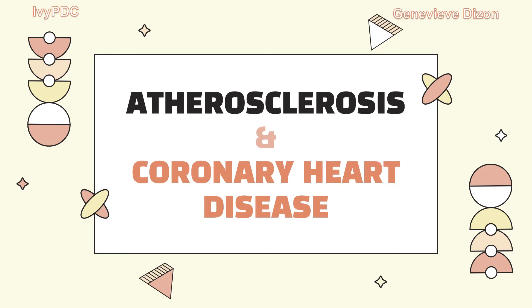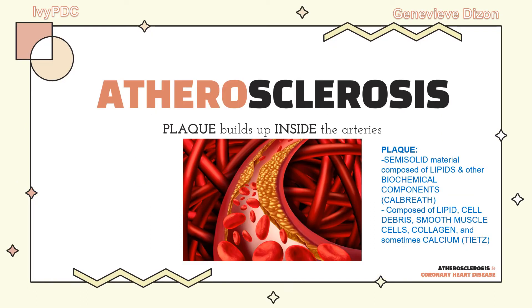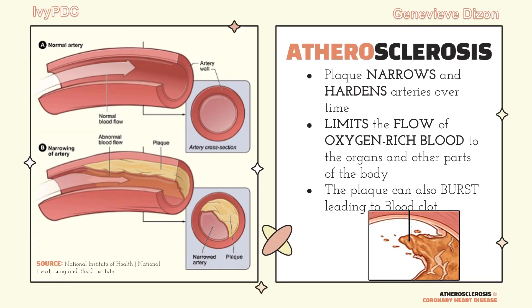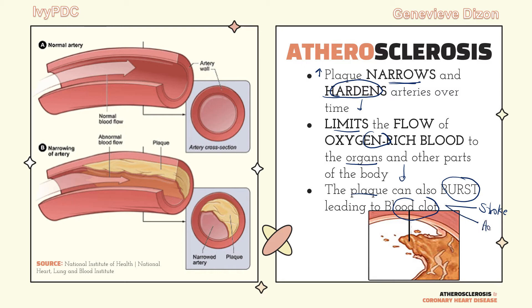Now that we know the reference ranges, let's discuss atherosclerosis and coronary heart disease. Atherosclerosis is defined as the buildup of plaque inside the arteries. As plaque builds up over time, it can harden and narrow down the artery, which limits the flow of oxygen to different parts of the body. Plaques can also burst or rupture, allowing blood clots inside the artery. In the brain, this is known as stroke, and if it happens in the heart, it is known as a heart attack.